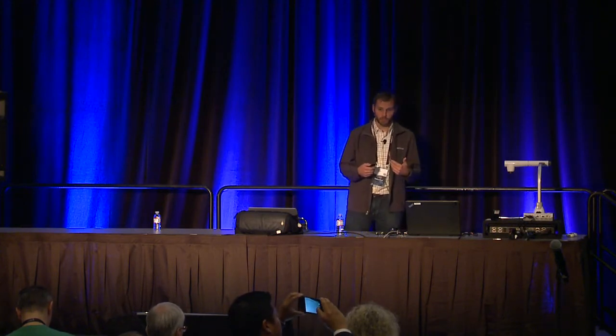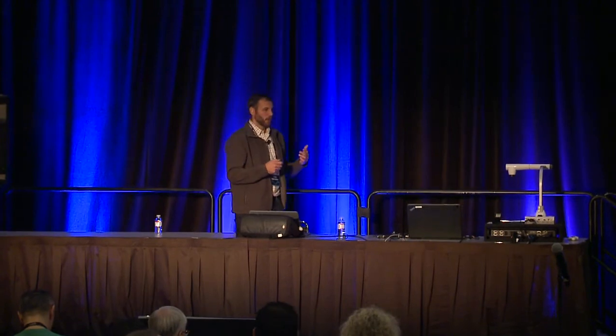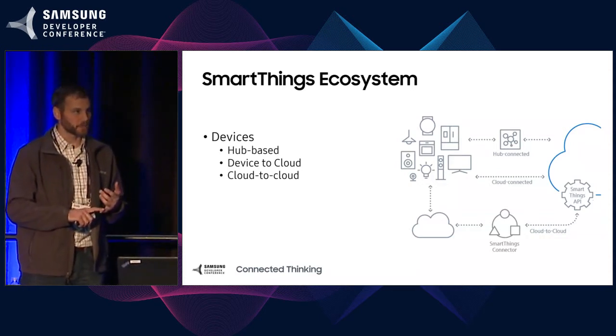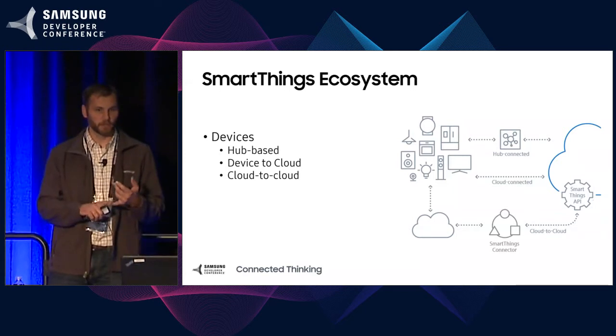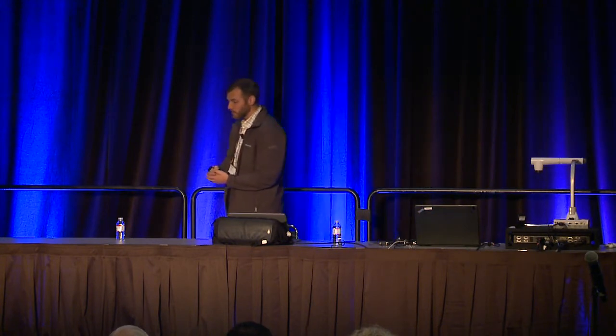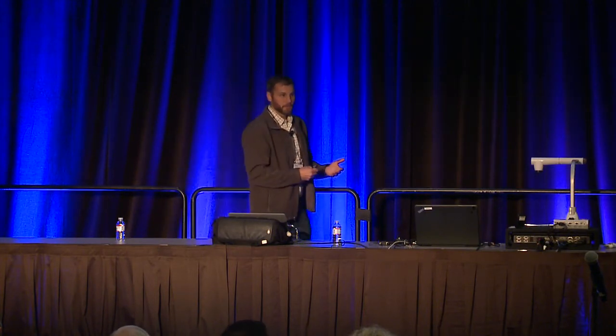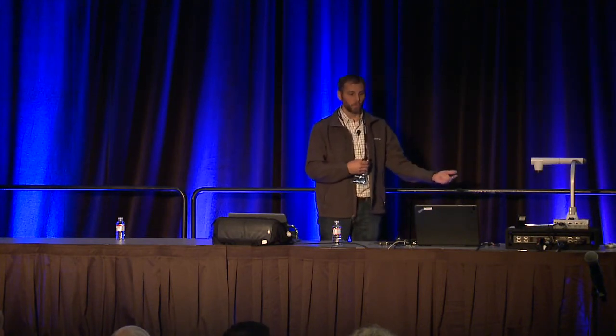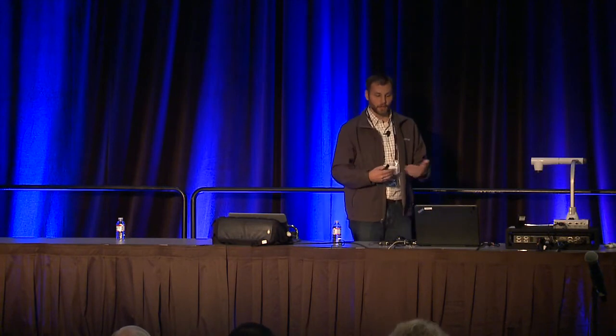First I want to talk about the SmartThings ecosystem. Devices can connect to the SmartThings cloud in a number of ways. They can be hub-based devices — your traditional home automation devices that use Z-Wave or Zigbee — or LAN-based devices like Hue light bulbs. Some devices connect directly to the cloud, like the Samsung fridge or the robot vacuum. And then we have cloud-to-cloud connections, like the Tesla demo Bob and Vinay showed, where we talk from our cloud to their cloud.